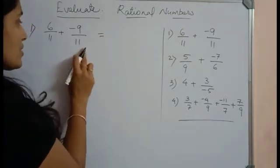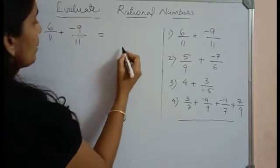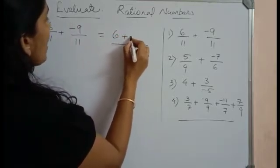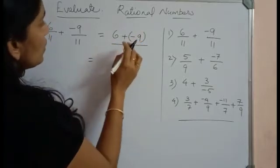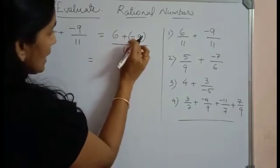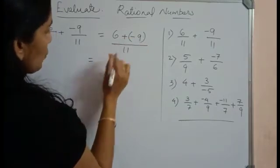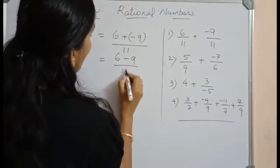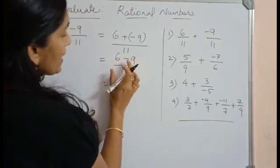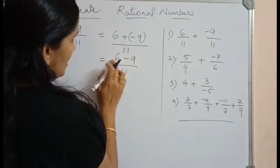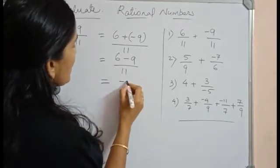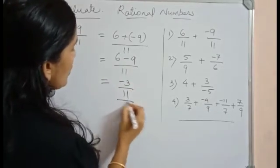Since the denominators are same, we can just add only the numerators. Upon 11, this will be 6 + (-9). We are multiplying a positive sign with a negative sign. This becomes 6 - 9 divided by 11. Here we are using the sign rule. -9 is greater than 6, so subtract 6 from 9. That is equal to -3/11. This is your answer.